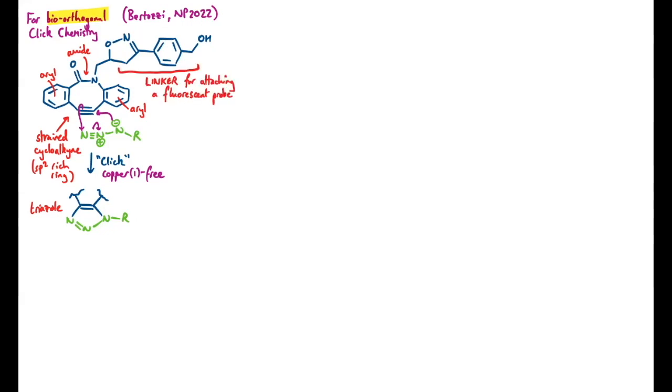Now this unit at the top, with the heterocycle and the benzene ring, is a linker unit that allows us to attach a fluorescent probe, for example, to our cycloalkyne, and so it can get carried around in the same place. So we could use that hydroxyl group to do some carbonyl chemistry and attach any fluorescent probe we like.